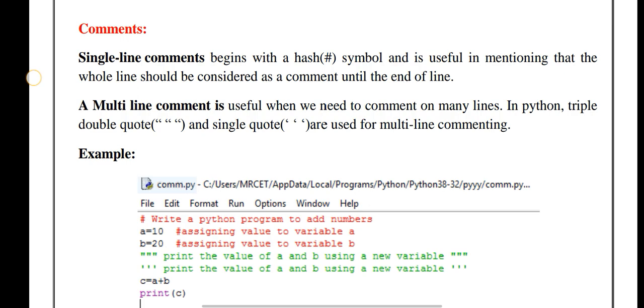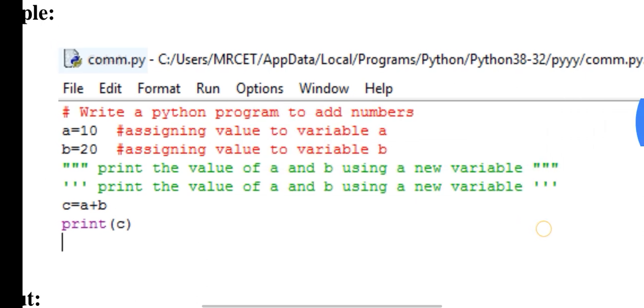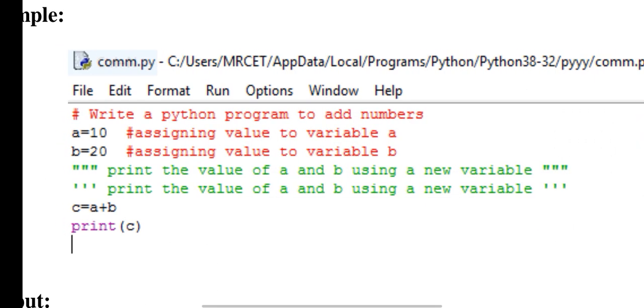Now we will see examples. You can see the first line: write a Python program to add numbers. In this we use hash to comment because it's a single-line comment. Below this line also, two hashtags are being used to comment on single lines. For single-line comments we use hashtag.